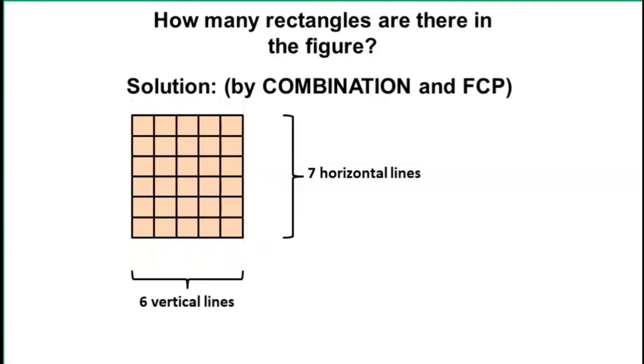Observe in the figure that we have 7 horizontal lines and 6 vertical lines. Also, notice that we may form a rectangle by using 2 of these horizontal lines and also 2 of these vertical lines. I'll show some of them.